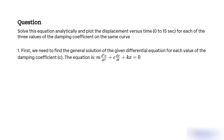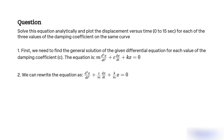First, we need to find the general solution of the given differential equation for each value of the damping coefficient C. The equation is m·d²x/dt² + c·dx/dt + kx = 0, which we can rewrite as d²x/dt² + (c/m)·dx/dt + (k/m)·x = 0.